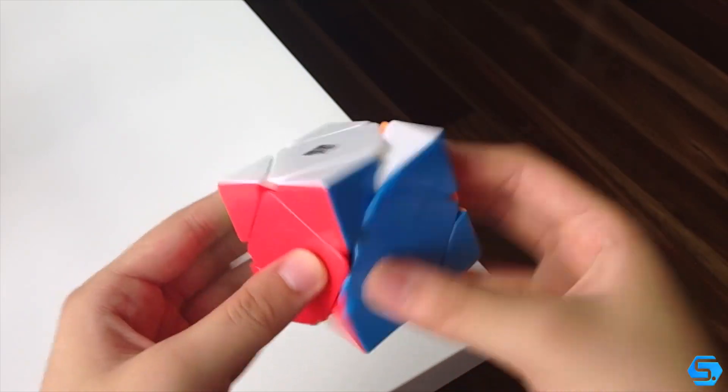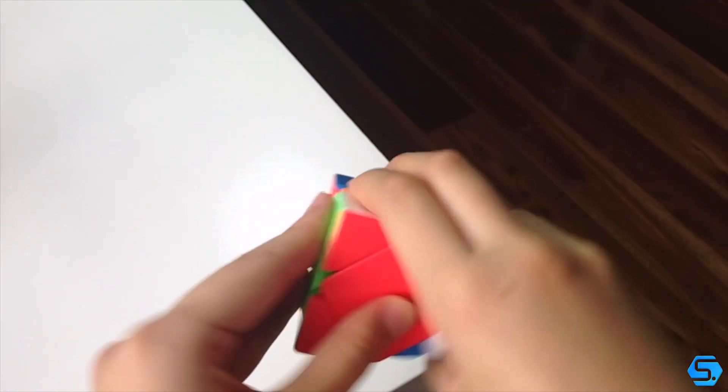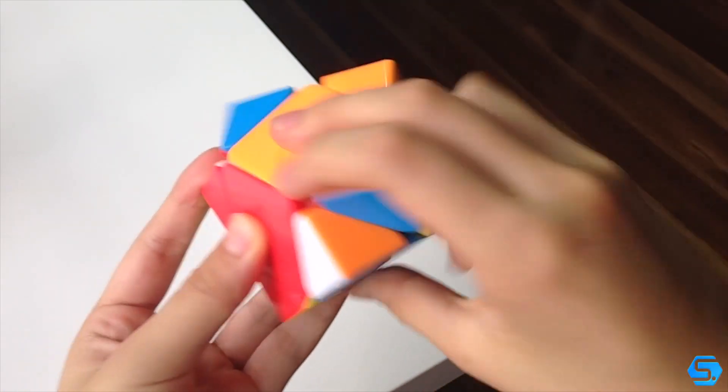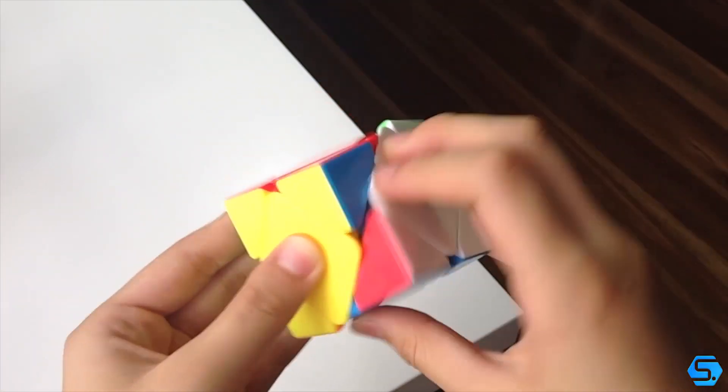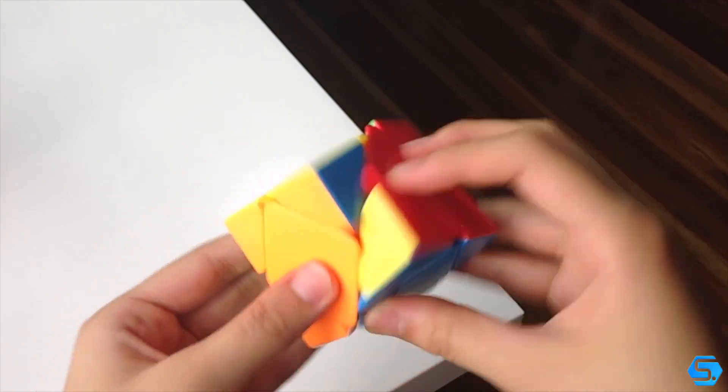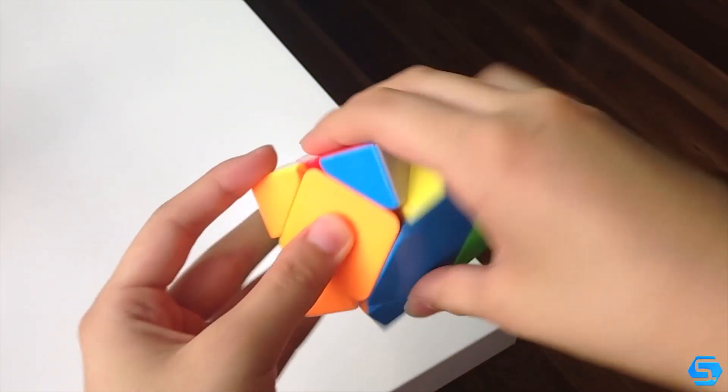Moving right along, the first thing that I noticed is that the clicks that the magnets make are a lot softer than the ones with four bearings. I personally really like this. I think that once I get used to it, it would allow me to turn at faster speeds and with less small lockups along the way.